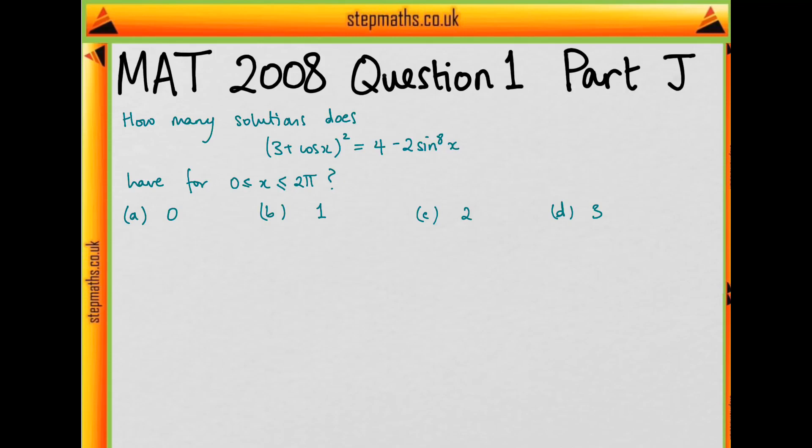But actually, if we do that—if I call this star—we're going to get an equation with cos to the power of 18, and that's still going to be very difficult to solve.